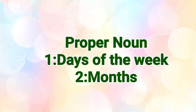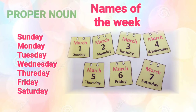A calendar has days of the week and months, and they are also proper nouns. For example, Sunday, Monday, Tuesday, Wednesday, Thursday, Friday, and Saturday are all proper nouns, and they stand with a capital letter.